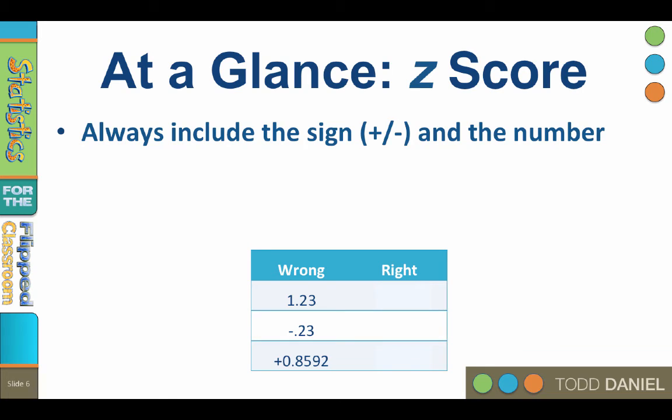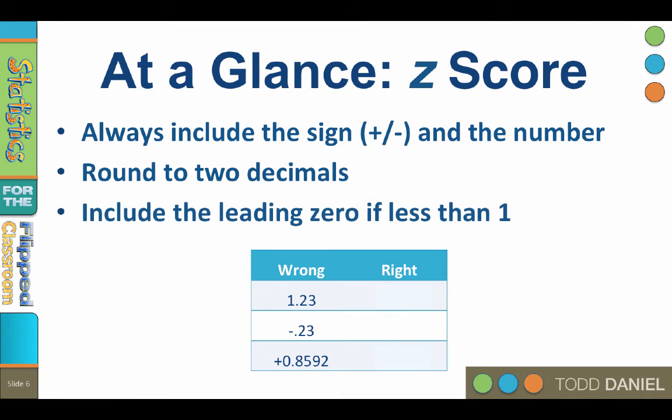Number three, always include the sign positive or negative and the number. Round to two decimals and include the leading zero if the z-score is less than one. Remember the rule is that if a number cannot exceed one, do not include a leading zero. For example, probability can only be between zero and one, so no leading zero on probabilities. A correlation is always between negative one and positive one, so again, no leading zero. But a z-score can be greater than one, so you should include the leading zero.